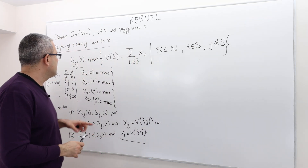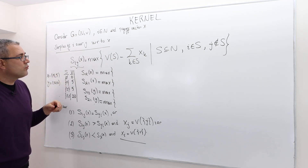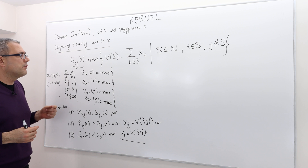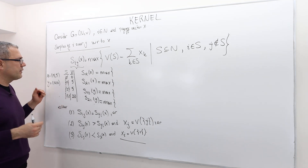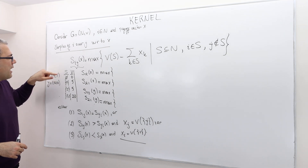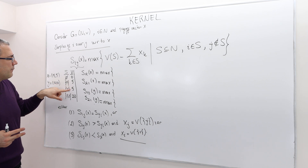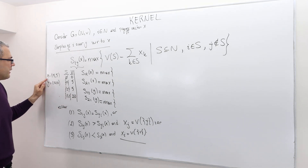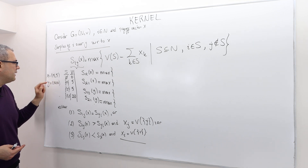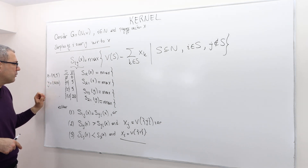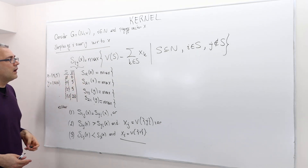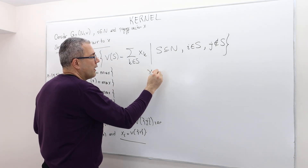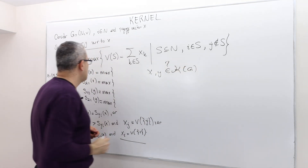Here is the example for kernel. I'm using a simple two-player example — three players would make calculations more complicated but the idea is exactly the same. There are two players; if each player is alone their worth is five, but if they're together their worth is twenty. We have two payoff vectors: x is the unfair one, (15, 5), and y is the fair one, (10, 10). Both of them are stable. Now let's see if x and/or y are in the kernel of this game G.